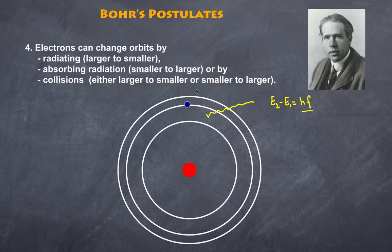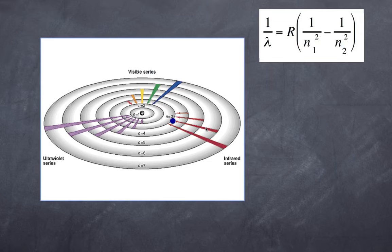And lastly, these electrons can change orbit by collisions—in other words, going up or down through collisions with other atoms. And here is where Niels Bohr had a great insight.